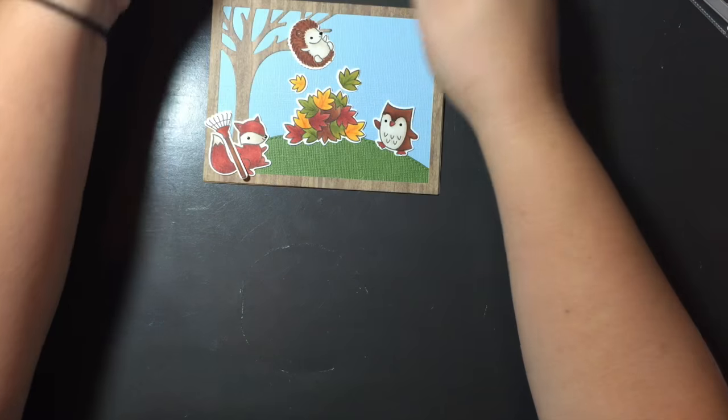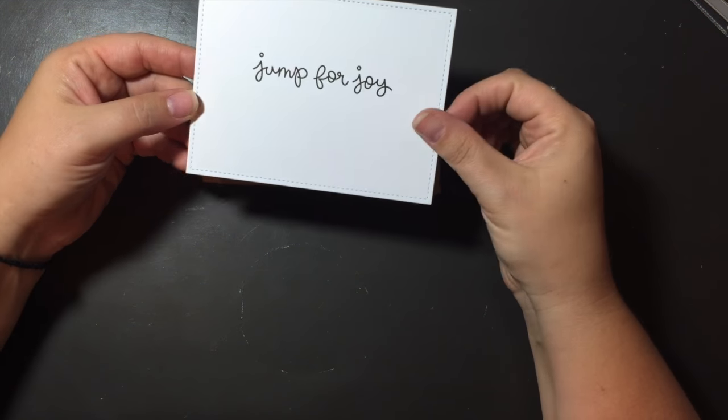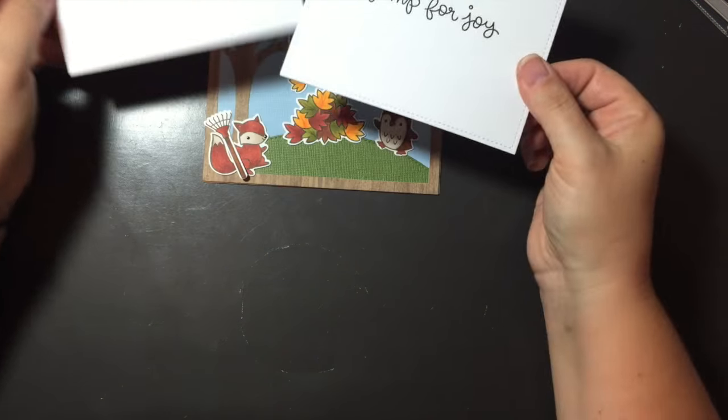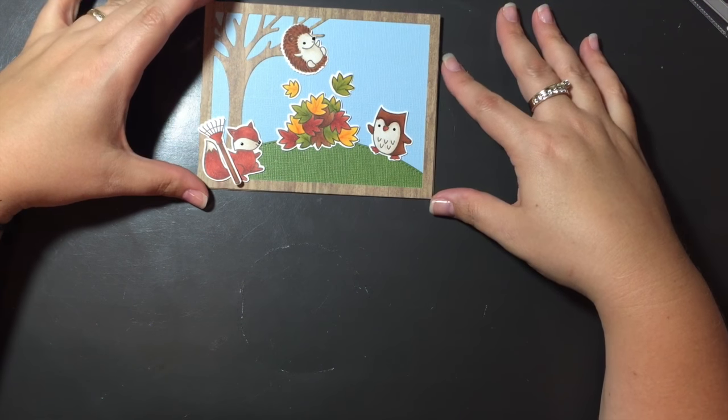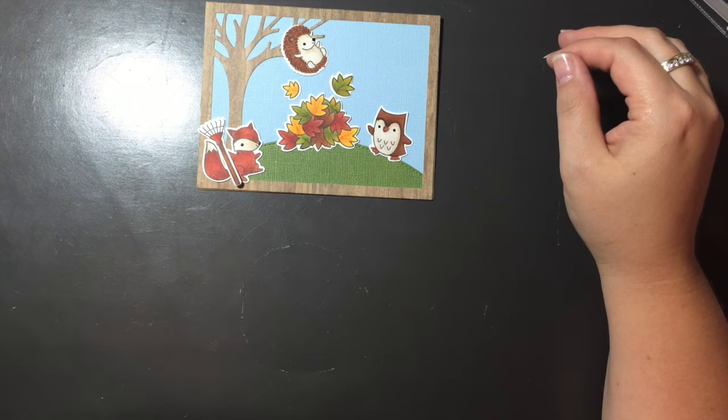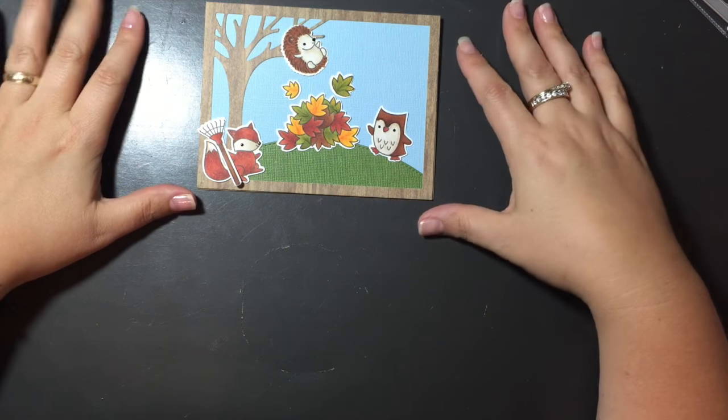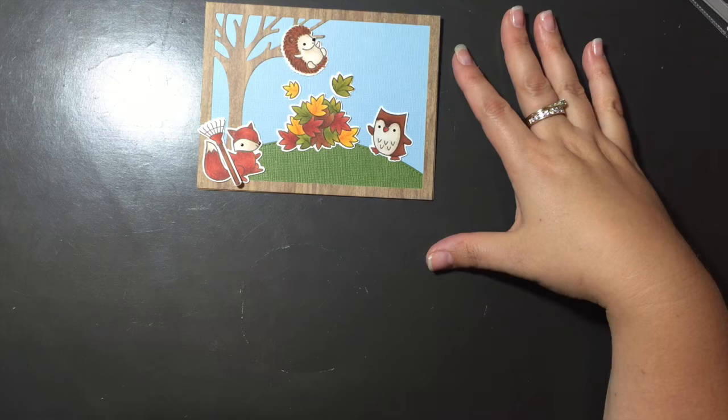And I have the insides already cut with the Lawn Fawn stitched rectangles. And stamped with the sentiments. And I'm just going to glue them inside the cards. Alright, so thank you for watching. Leave a comment, subscribe. And don't forget to visit the Not Too Shabby Shop. Have a great day. Thanks, bye.